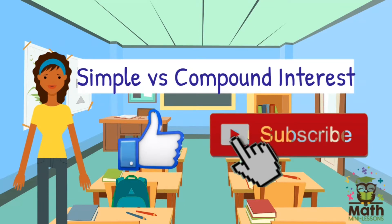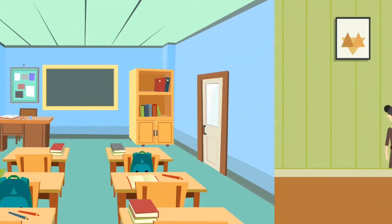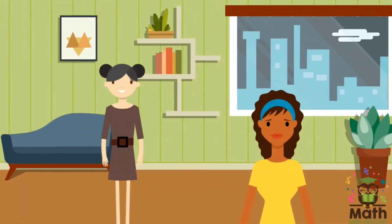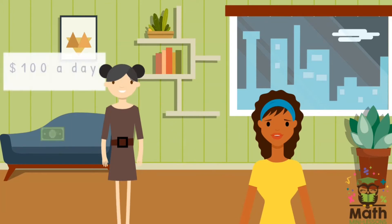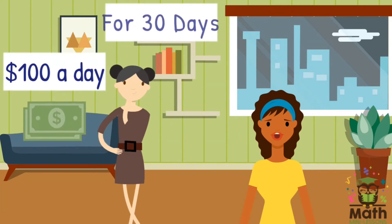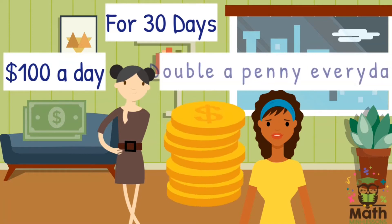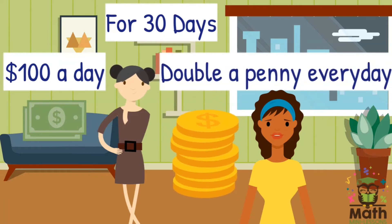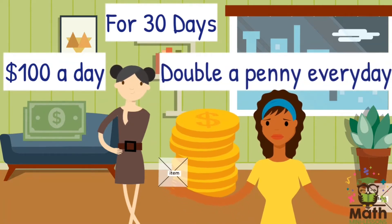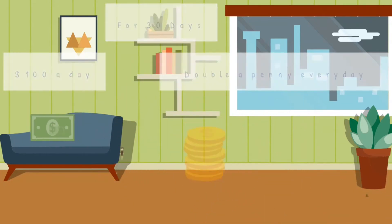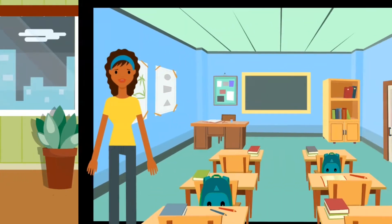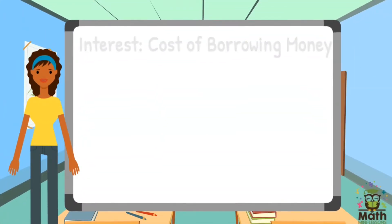Time for a riddle: would you rather get $100 a day every day for a month, or double a penny every day for one month? Which would you choose? In the last video you learned that interest is the cost of borrowing money.